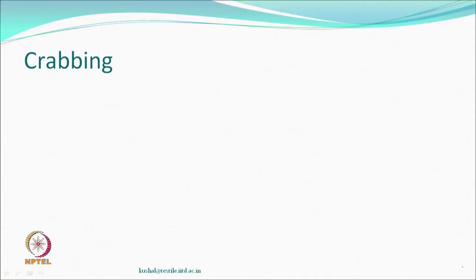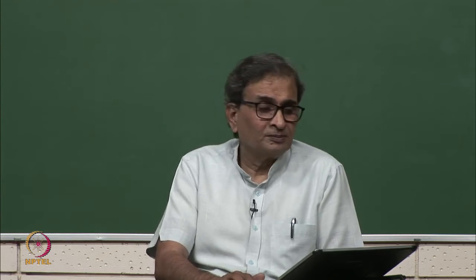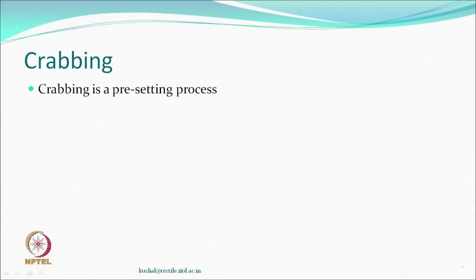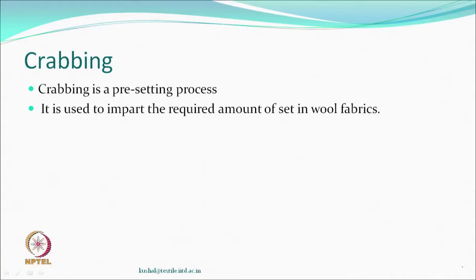Based on this discussion, a finishing process — or pre-finishing process — for woolen fabrics was designed, and it is called crabbing. It is a pre-setting process, meaning it is not a final process. Crabbing is one of the interesting processes for woolens: a pre-setting process where a certain amount of required set may not be permanent, but it is quite good depending on what you are doing.